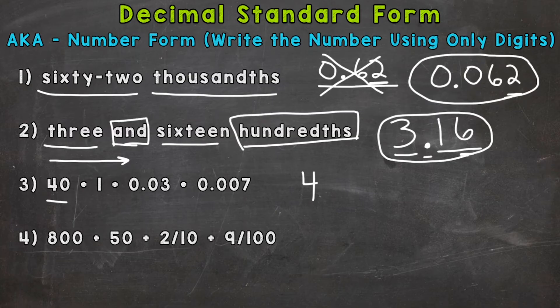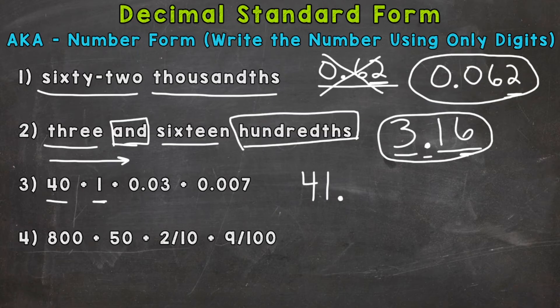Now we just work our way right. After the tens place we have the ones place, so we check if we have anything with a value in the ones place. This one is in the ones place, so we have 41. After the ones place we have a decimal, then comes the tenths place. We don't have anything sitting in the tenths place, so we put a zero. Next is the hundredths place, and we do have a three with a value of three hundredths.